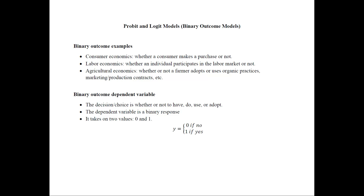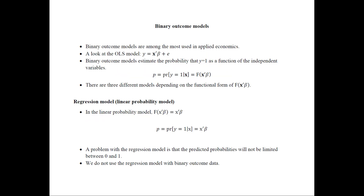These binary choices are typically coded as 0 and 1. This is just a convention — that's what statistical software typically expects. The y variable would be defined as 0 if it's no or don't have something, and 1 if it's yes. These binary outcome models — the probit and logit models — are among the most used in applied economics, behind the typical linear regression model.